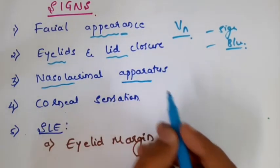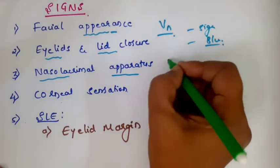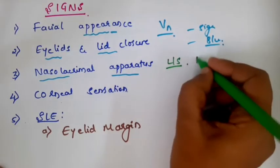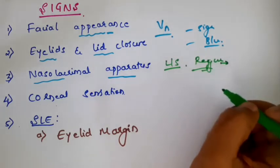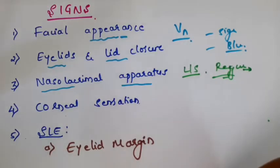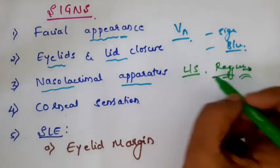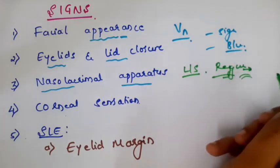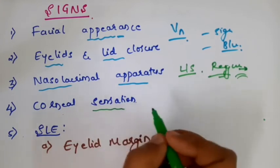The lacrimal apparatus is one of the most important things when treating the corneal ulcer. If you miss examining the lacrimal apparatus system - if you don't do at least lacrimal syringing or the regurgitation test - you may miss a big clue to the cause of the corneal ulcer. The patient may be harboring infecting organisms in the lacrimal sac which constantly come and infect the cornea, so perform the regurgitation test before going to the corneal examination.